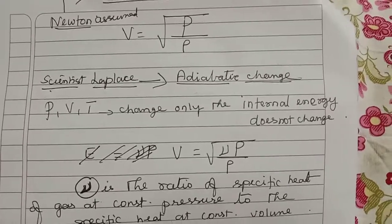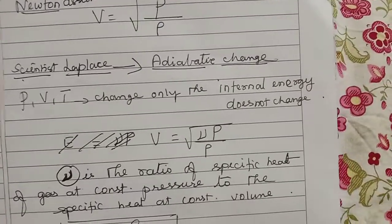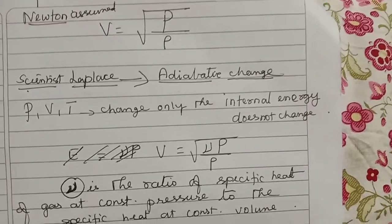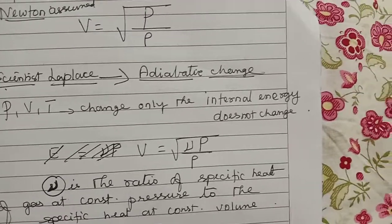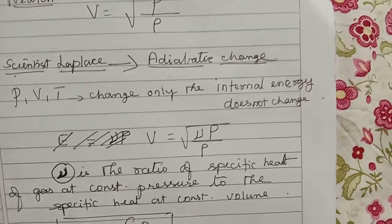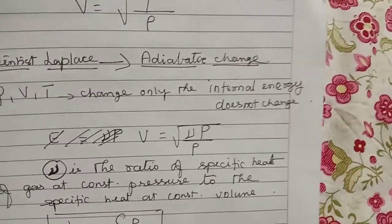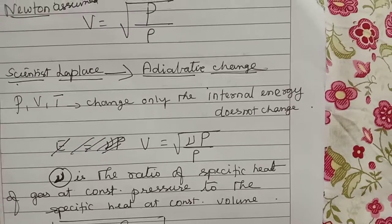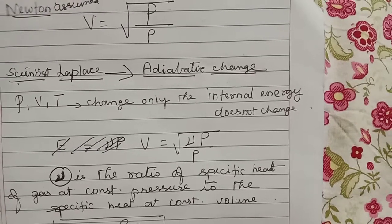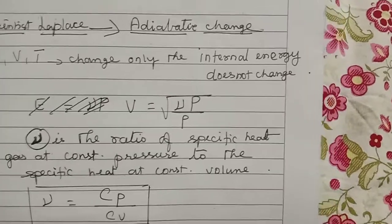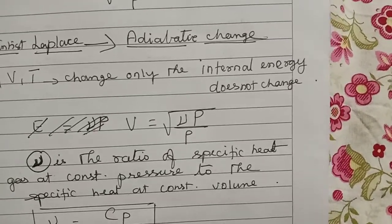Now later, after Newton, one more scientist named Laplace modified the formula and he told that this change is not isothermal change. It should be adiabatic change where the pressure, volume, and temperature change; it does not remain constant. Only the internal energy does not change or the internal energy will be constant.